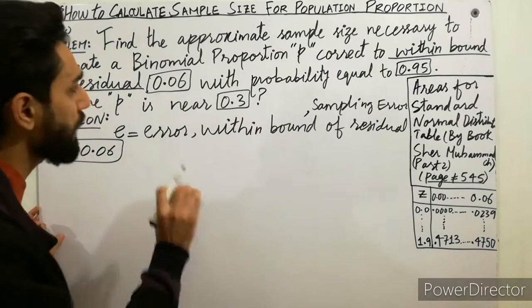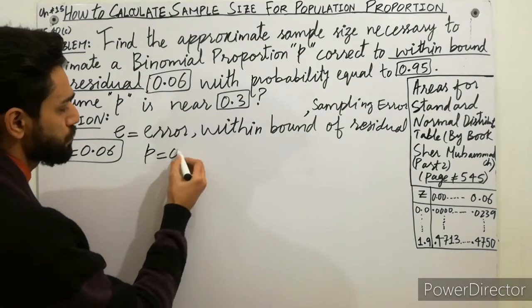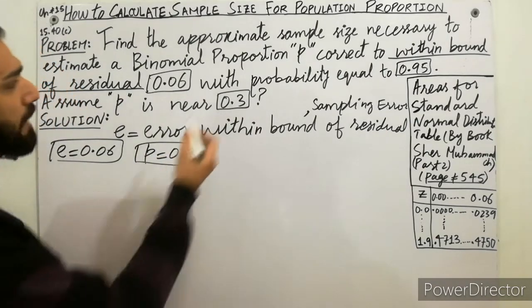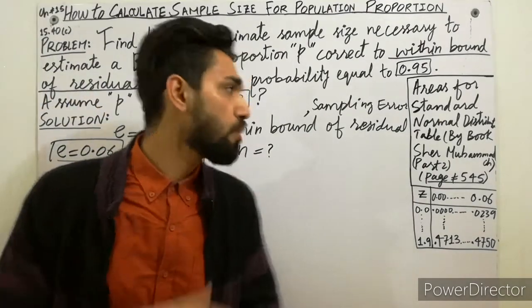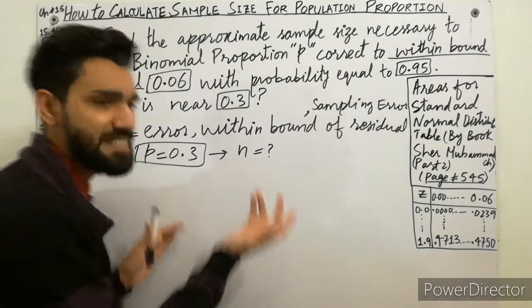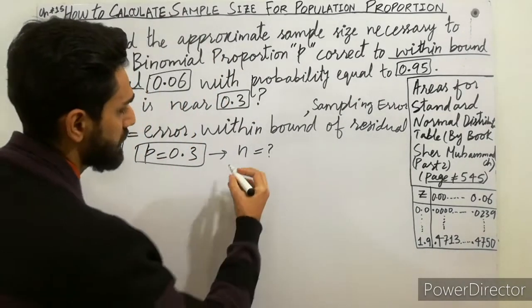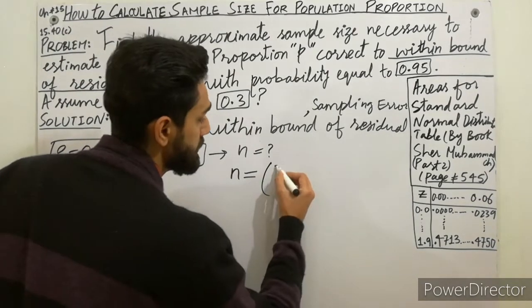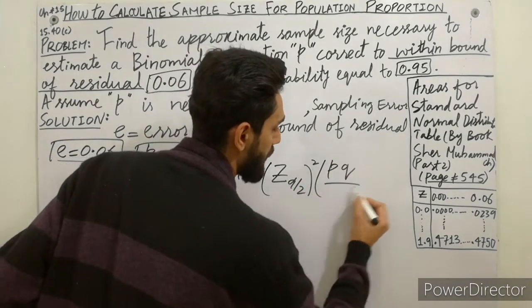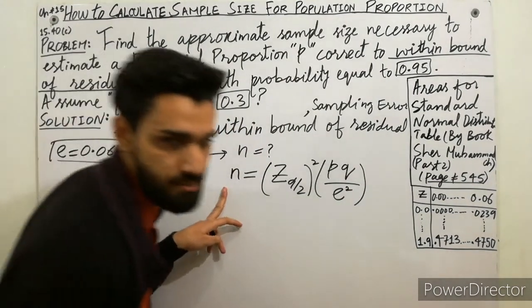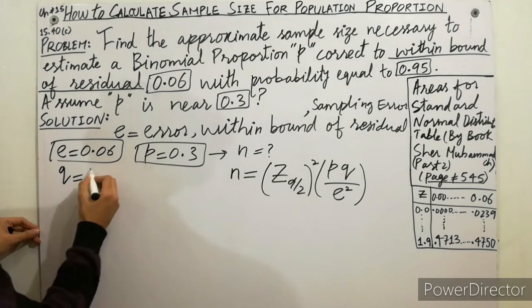Now you have to calculate the sample size N. The formula for sample size for proportion is: n is equal to z alpha by 2 completing the square, times PQ divided by E square. We will use this formula to calculate the sample size. Since P is already given, you have to calculate Q. Q is equal to 1 minus P.